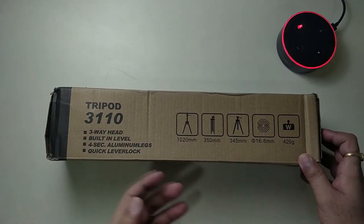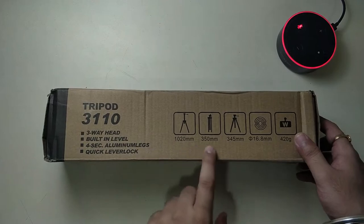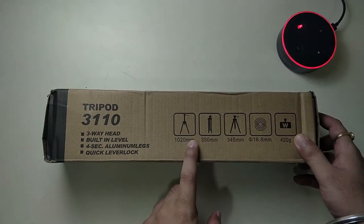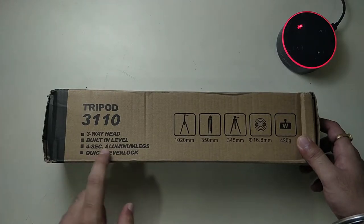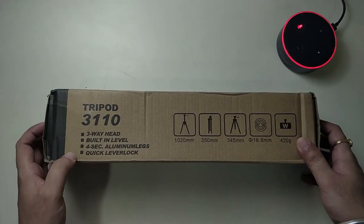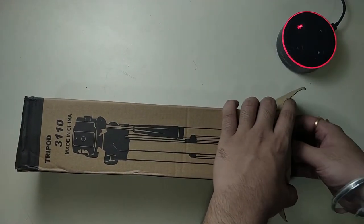The packaging is simply average, so there's no special packaging. We have a few features over here, so 1020mm as maximum height and a few other features that it offers, and all the panning shots you can take out with this particular tripod. Let's quickly open this and take a look at the tripod itself.